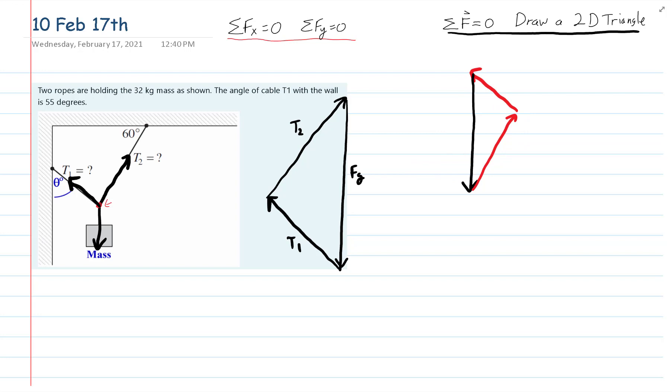The force of gravity is equal to mg, and that is going to be 32 kilograms times 9.8, and that's going to be 313.6 newtons.